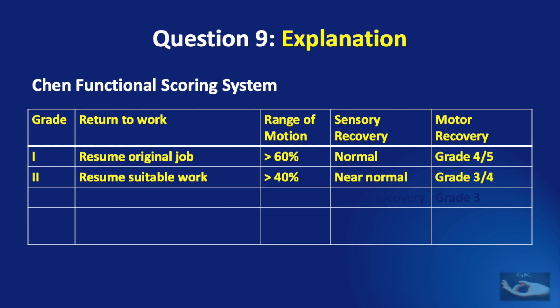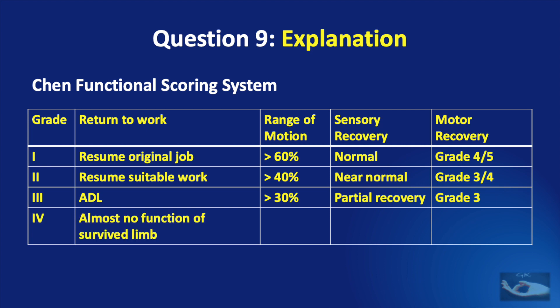Grade 2: patient able to resume suitable work with more than 40% range of motion, near-normal sensory recovery, and grade 3 or 4 motor recovery. Grade 3: patient only able to do activities of daily living with around 30–40% range of motion, partial recovery of sensation, and grade 3 motor recovery. Grade 4: almost no function of the surviving limb.